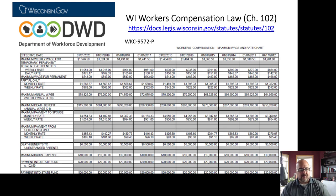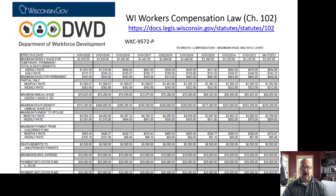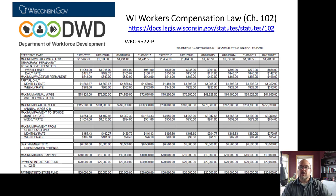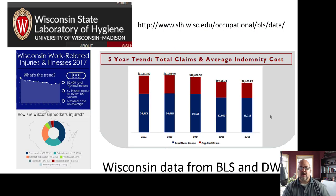The death benefit is calculated as four times the annual wage, and they have equations to figure out annual or monthly wage. The maximum death benefit — what is awarded to survivors of someone who dies at work in Wisconsin — is either four times their annual wage, up to a maximum of $315,000. So if you ask what price Wisconsin puts on a human life for someone injured at work, it's about $315,000. That's very, very sad.